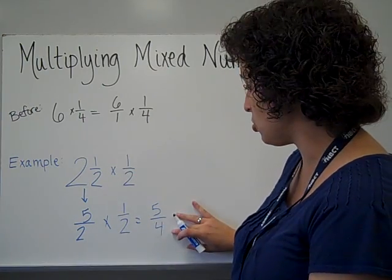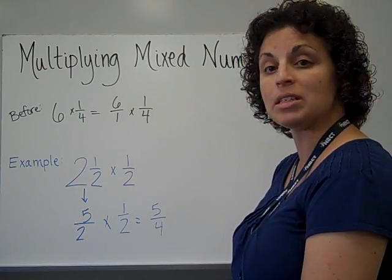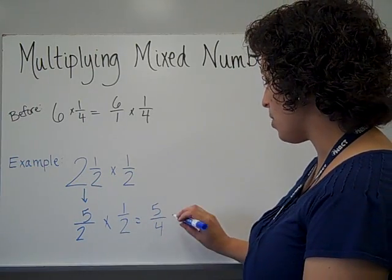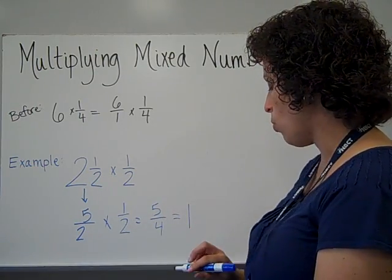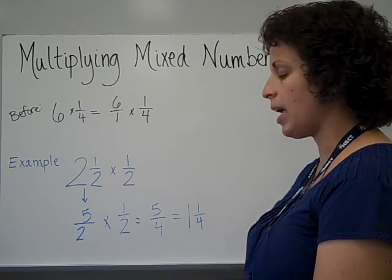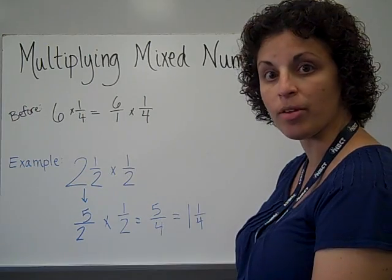Now, this answer is an improper fraction and it needs to be simplified. So 5 over 4. 5 divided by 4 would be 1, with 1 left over. 1 and 1 fourth would be my final answer.